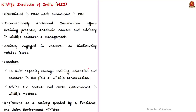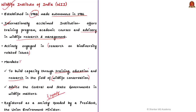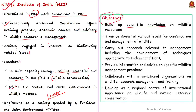The Wildlife Institute of India was established in 1982 and made autonomous in 1986. It is an internationally acclaimed institution offering training programs, academic courses, and advisory services in wildlife research and management. It is also actively engaged in research on biodiversity-related issues. Its mandate is to build capacity through training, education, and research in wildlife conservation, and to advise central and state governments in wildlife matters. Objectives include building scientific knowledge on wildlife resources, training personnel, and carrying out research.